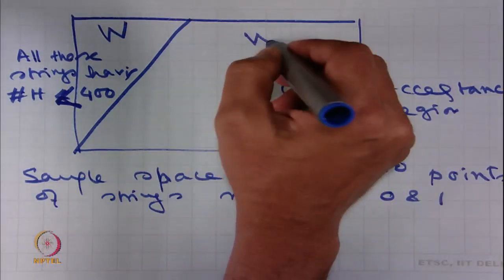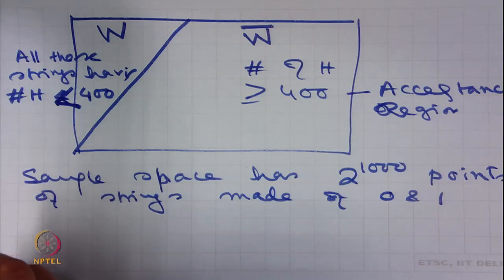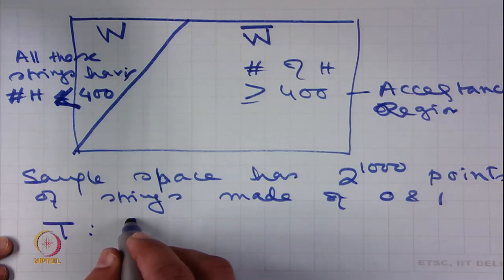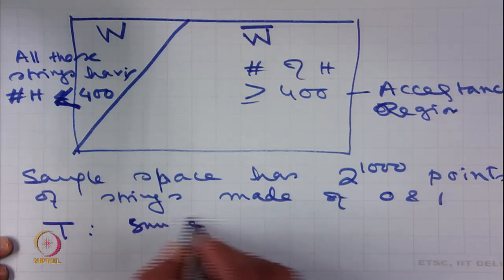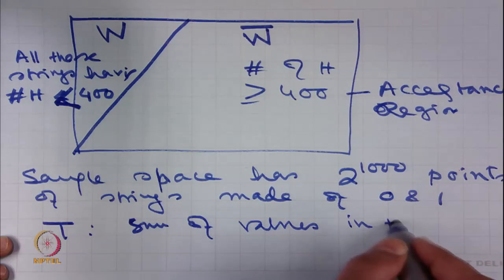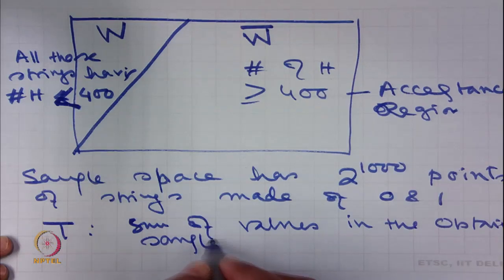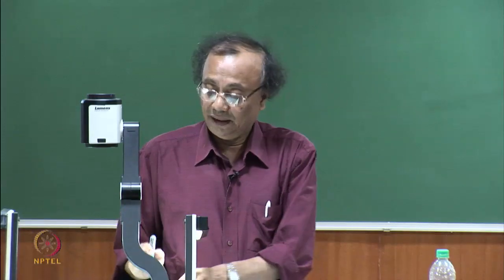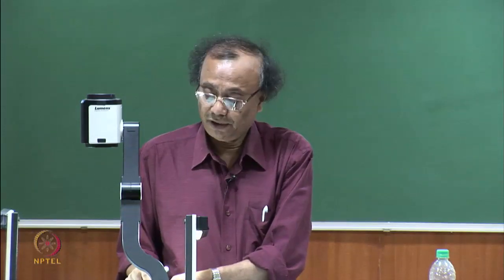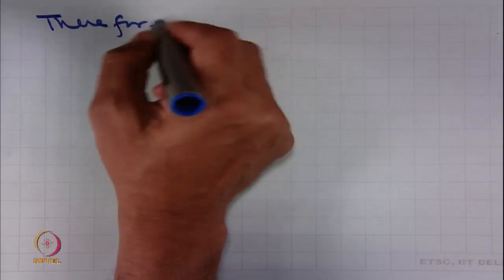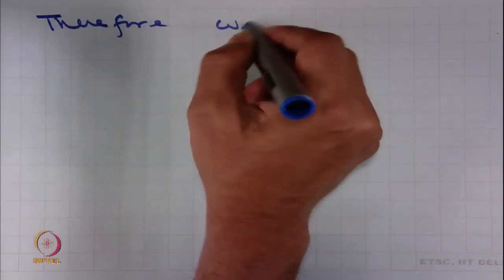The complement of W is called the acceptance region. T equals the sum of values in the obtained sample, and the rejection criterion is that the number of heads must be less than 400; otherwise we accept. Therefore, we shall reject the null hypothesis when T < 400.